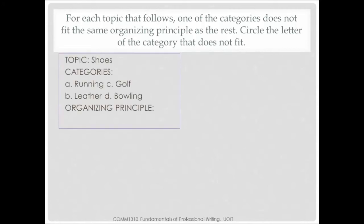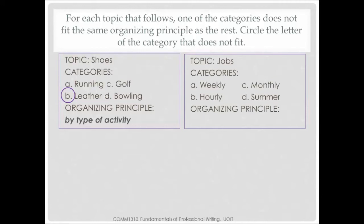Here's a quick activity. You must determine the organizing principle, then figure out which item does not belong. In the first one, the topic is shoes and there are four categories: running, golf, leather, and bowling. The organizing principle is type of activity — most of them are shoes used in a particular activity. Therefore, 'leather' does not belong. In the second example, the topic is jobs. The categories are weekly, monthly, hourly, and summer. The organizing principle is pay period, and 'summer' does not belong because people are not paid by the summer — they get paid by the week, by the hour, or by the month.